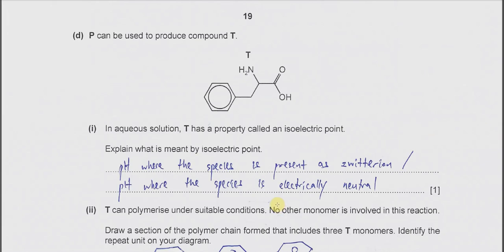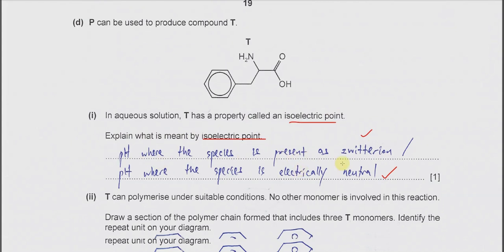Part D: P can be used to produce compound T. In aqueous solution, T has a property called the isoelectric point. The isoelectric point is the pH at which the species is present as a zwitterion — with neutral overall charge. The amine forms an ammonium group and the carboxylic acid forms a carboxylate group.